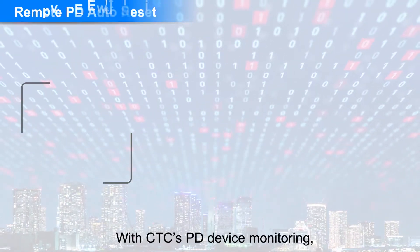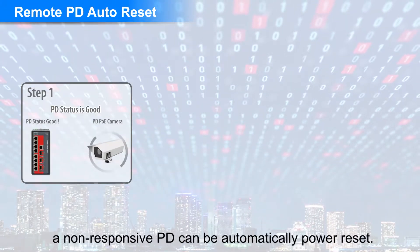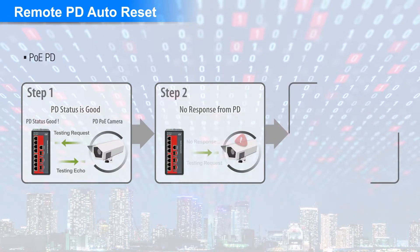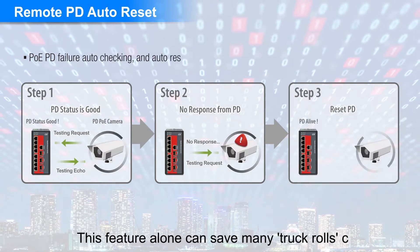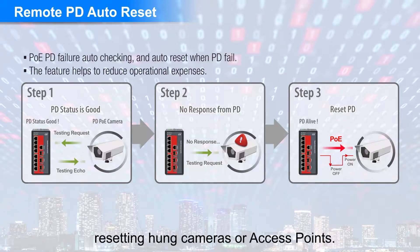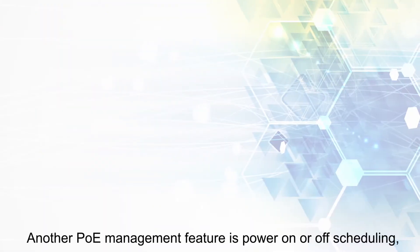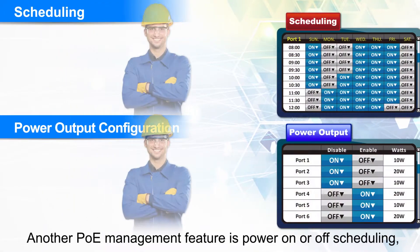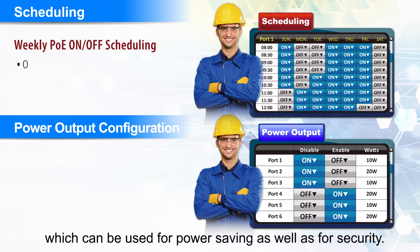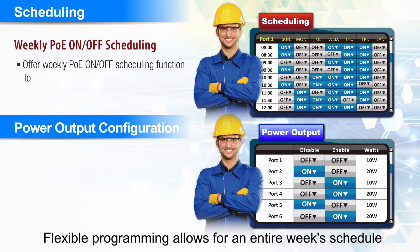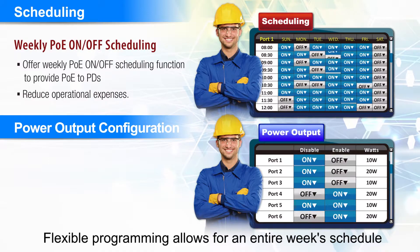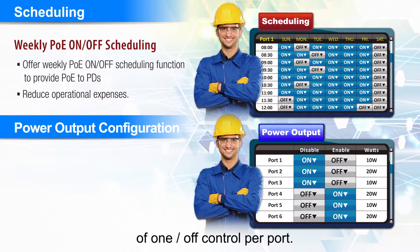With CTC's power device monitoring, a non-responsive PD can be automatically power reset. This feature alone can save many truck rolls resetting hung cameras or access points. Another PoE management feature is power on-off scheduling, which can be used for power saving as well as for security. Flexible programming allows for an entire week's schedule of on-off control per port.